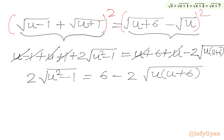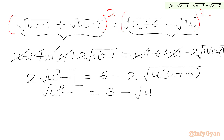The equation is divisible by 2, so dividing both sides by 2 gives: square root of (u² - 1) equals 3 minus square root of u times (u plus 6).